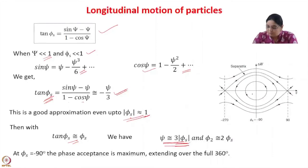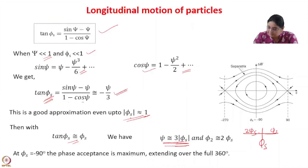With tan(phi_s) approximated as phi_s for small phi_s, we get psi equal to 3 times phi_s. So for small values of phi_s and psi, the separatrix phase width is simply 3 times the modulus of the synchronous phase. If this is phi_s, then phi_2 is 2 times phi_s, and the total extent is 3 times phi_s.